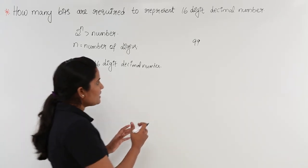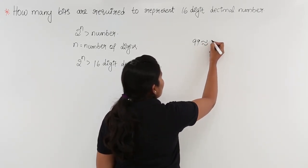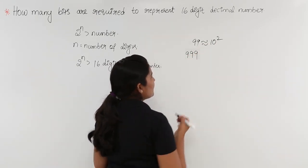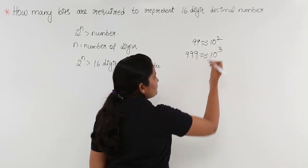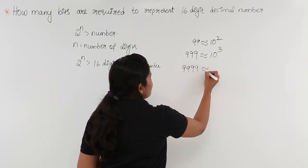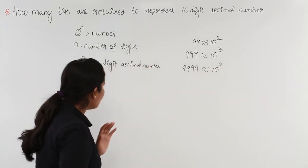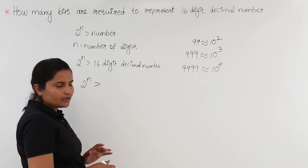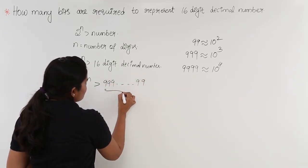The maximum 2-digit number is 99, which is nearly 10 squared. The maximum 3-digit number is 999, which is nearly 10 cubed. The maximum 4-digit number is 9999, which is nearly 10 to the power 4. Following this pattern, in our equation we replace the 16-digit decimal number with all sixteen 9s, which is approximately 10 power 16.